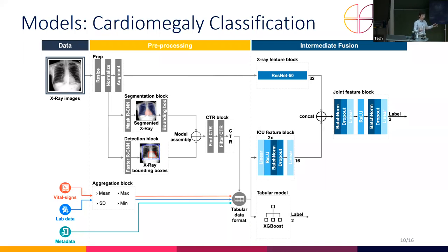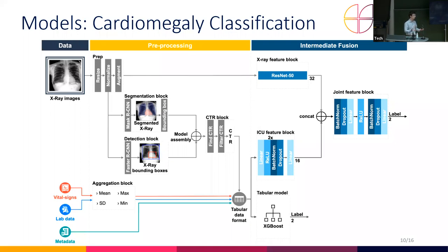For the actual classification, we have two different models. Firstly, our multimodal model taken from Grant et al., published at MIUA in 2021. This takes pre-processed images and passes them through an X-ray feature block — essentially the initial layers of a ResNet-50 — outputting 32 nodes worth of features from the images. We then pass the tabular data through a two-layer feed-forward network outputting 16 nodes worth of features. These are concatenated and passed into the joint feature block for final classification, with back propagation of the error through the concatenation layer. We also have a secondary model using only tabular data directly through an XGBoost model. We use two further unimodal approaches: a full ResNet-50 for images only, and an XGBoost for non-imaging only.